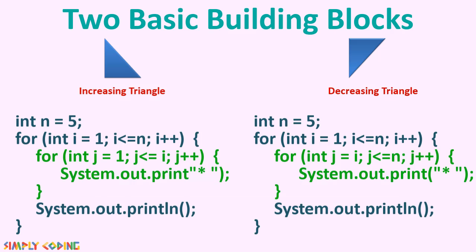We learned that we can make complex shapes using only two basic shapes: increasing triangle and decreasing triangle. We can make any complex triangular pattern by breaking it down to these two basic shapes. So if we see the diamond pattern, we have six triangles here.